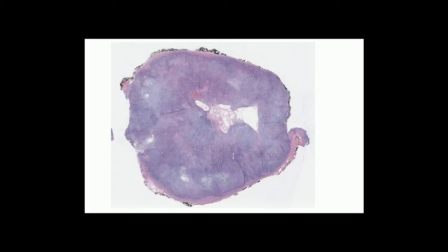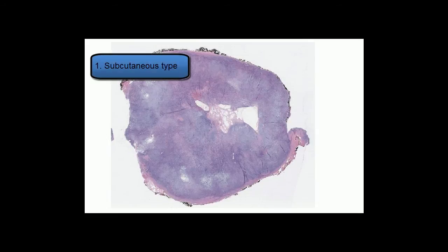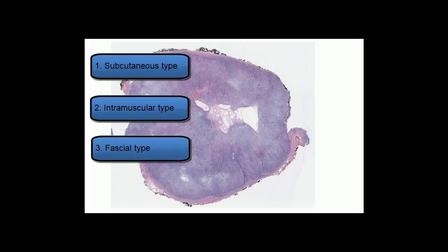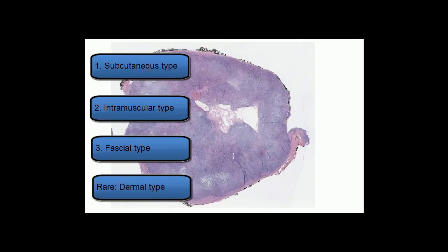As the name suggests, nodular fasciitis usually arises from fascia, and it may grow in three different patterns: either up into the overlying subcutis, down into the underlying skeletal muscle, or horizontally along the fascia. Rare cases, usually from the head and neck, may actually arise in the dermis and not involve the subcutis, fascia, or deeper structures.